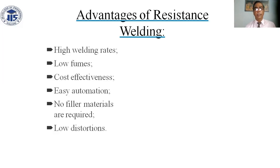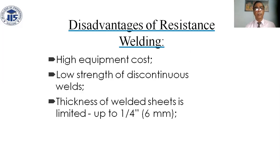Advantages of resistance welding: high welding rates, low fumes, cost effectiveness, easy automation, no filler materials needed, low distortion. Disadvantages: high equipment cost, low strength of dissimilar conductors, weld thickness limited to 1/4 inch, that is 6 mm.